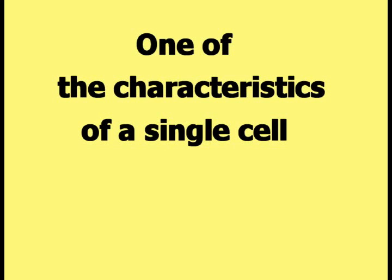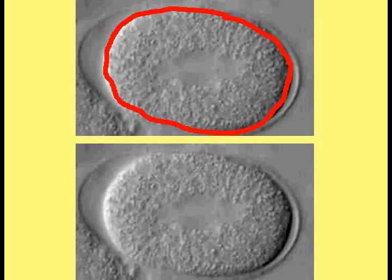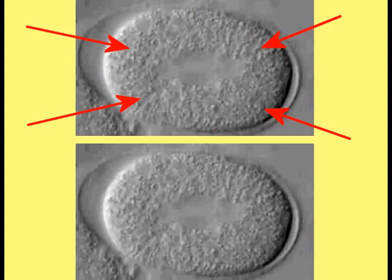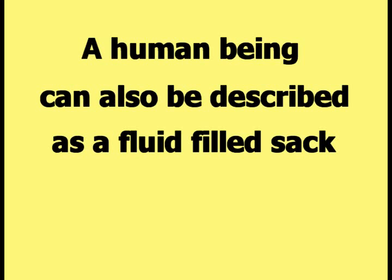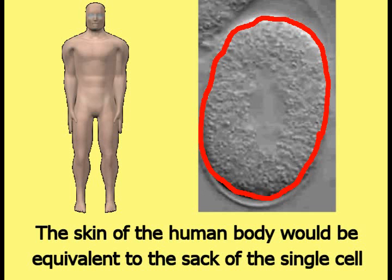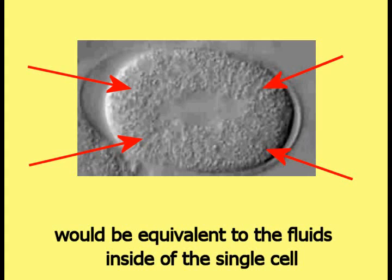One of the characteristics of a single cell would be the way in which it is constructed. A single cell can be thought of as a hollow sac that has an elliptical shape. The interior of the sac is filled with fluid and various other things that keep the cell alive, such as the nucleus. A human being can also be described as a fluid-filled sac, where the skin is equivalent to the sac and the blood and other fluids inside are equivalent to the fluids inside the single cell.